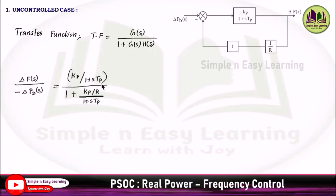G(s) is KP divided by 1 plus STP and the feedback is 1/R. So the denominator becomes 1 plus KP divided by (1 plus STP) times 1/R, which simplifies to KP/R.